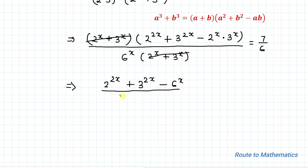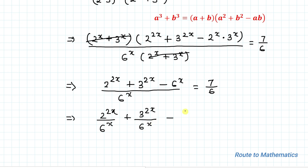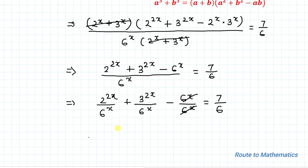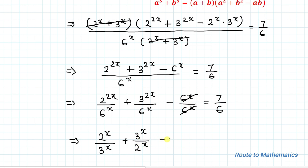Dividing by 6 to the power x in each term of the numerator, we get: 2 to the power x divided by 6 to the power x, plus 3 to the power x divided by 6 to the power x, minus 1, equals 7 by 6. Since 6 to the power x equals 2 to the power x times 3 to the power x, the first term simplifies to 1 over 3 to the power x divided by... giving us 2 by 3 to the power x, plus 3 by 2 to the power x, minus 1, equals 7 by 6.